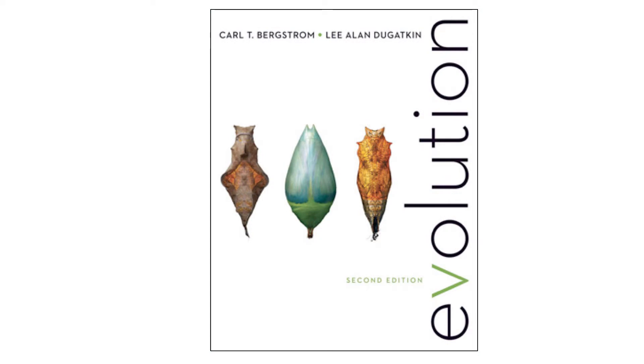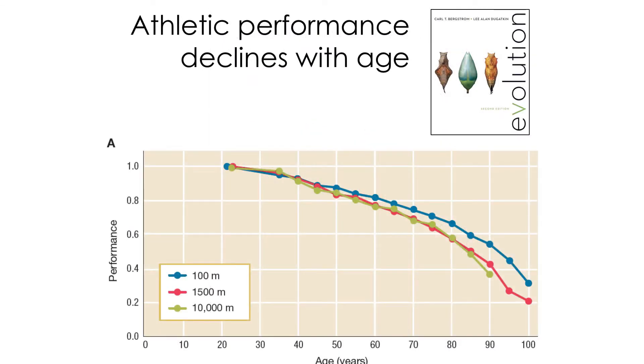Earlier in the quarter we had the opportunity as a class to call bullshit on Carl in his textbook. In his textbook he made a claim, he used a set of data to support the claim that athletic performance, physiological performance in humans, declines with age. And here you see the decline for these record holders at these different ages for the 100 meter, 1500 meter, and the 10,000 meter.